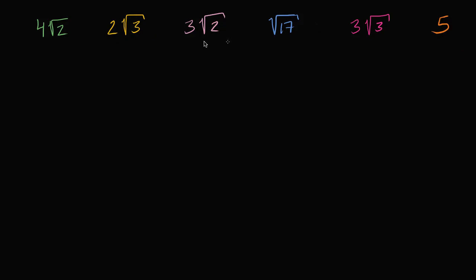I have six numbers here, and you see that five of them are irrational — they involve the square root of a non-perfect square. Our goal in this video is, without a calculator, to sort these numbers from least to greatest. Pause this video and see if you can do that.